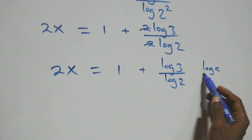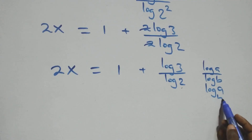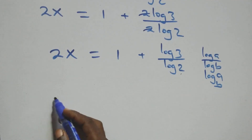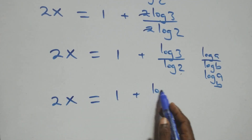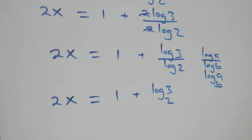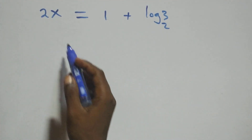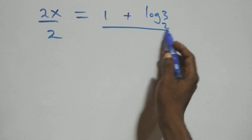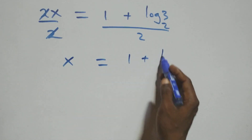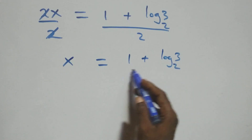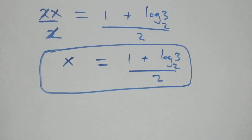We apply the change of base formula: log a over log b is the same thing as log a to base b. So we have 2x equals 1 plus log 3 base 2. Then we divide both sides by 2 — the 2s cancel — and we have x equals (1 plus log 3 base 2) all over 2. That is the value of x.